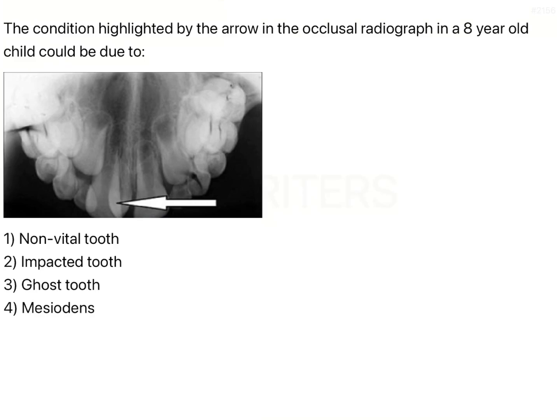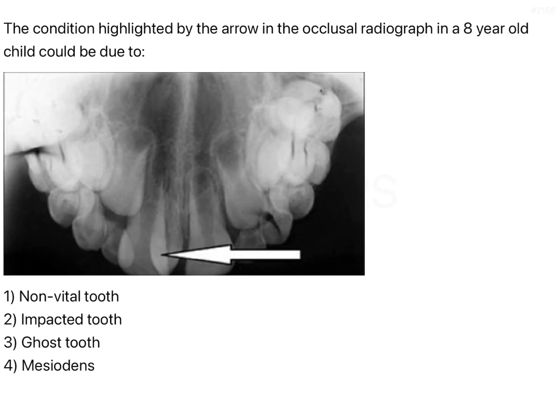The question is: the condition highlighted by the arrow in the occlusal radiograph in an 8-year-old child could be due to? I am enlarging the image, and what you can see is that you have the central incisors which are still in the process of forming because the apex formation is not complete. Both the right and the left central incisors are visible. In between the two central incisors, you have another tooth-like structure which is being developed, and that root is also just undergoing development.